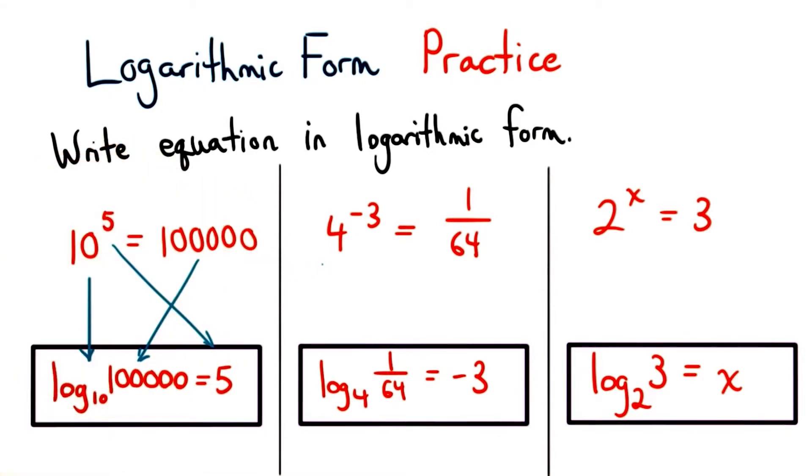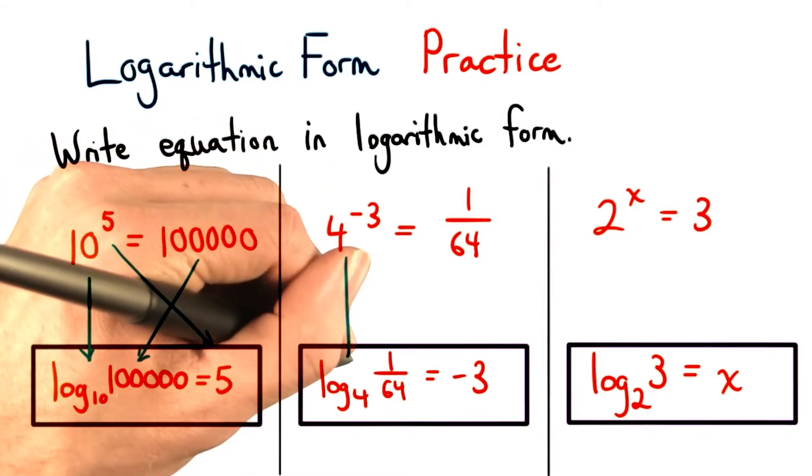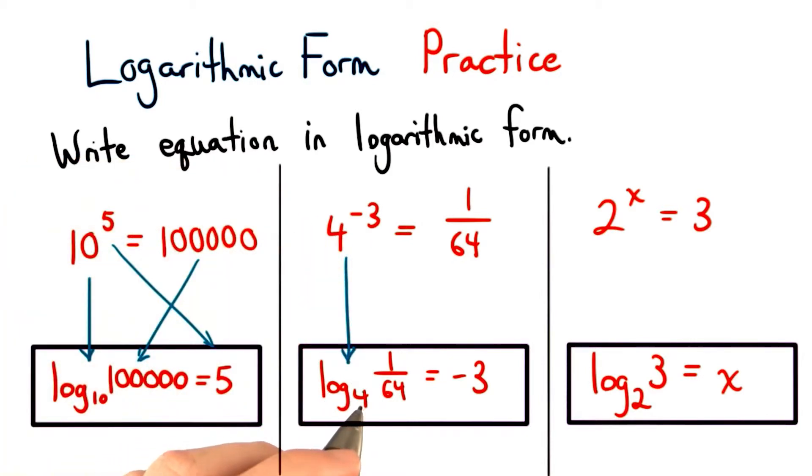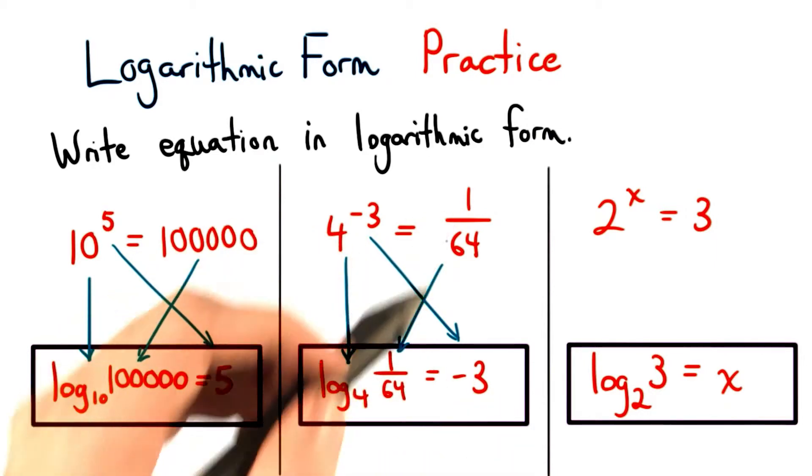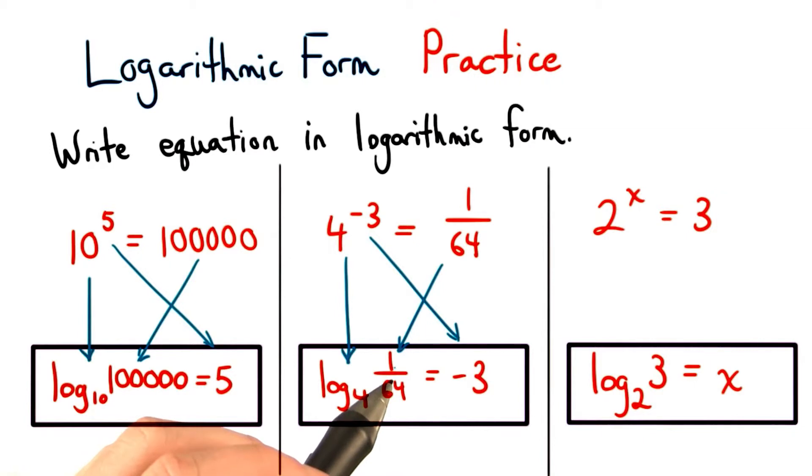For the second one, we'll use the same process. We have a base of 4, so this is the logarithm with base 4. The result of our logarithm equals negative 3. It's the exponent. And this leaves 1/64th here as the argument for our logarithm. It's the number that we take the logarithm of.